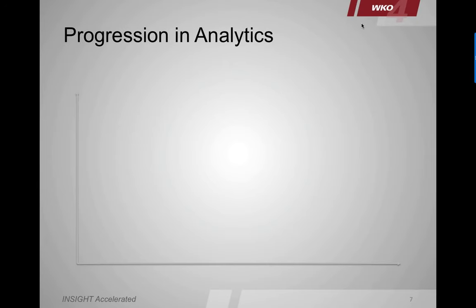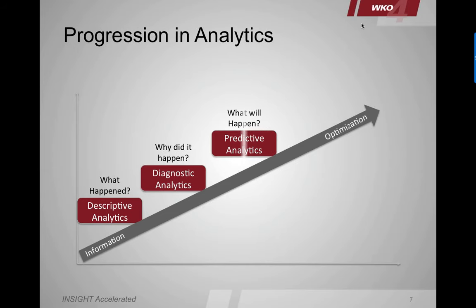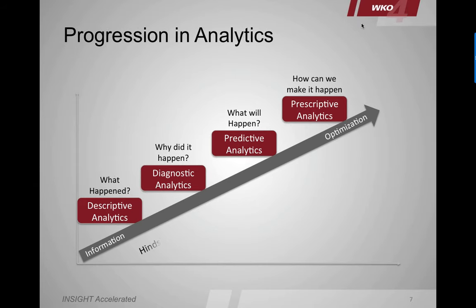Let's think about how analytics progress. First, you have descriptive analytics — what happened — which is what we've been looking at for a long time. Then we move toward diagnostic analytics — why did it happen. From there, we come to predictive analytics — what will happen. And then prescriptive analytics — how can we make it happen. This represents hindsight, insight, and then foresight.